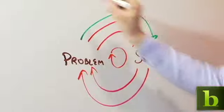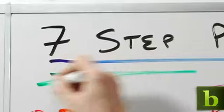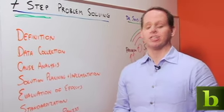To avoid that, Dr. Shoji Shiba of the Center for Quality of Management defined what he called seven-step problem solving, or seven steps to solve your problem in a way that will benefit the whole organization as thoroughly as possible.